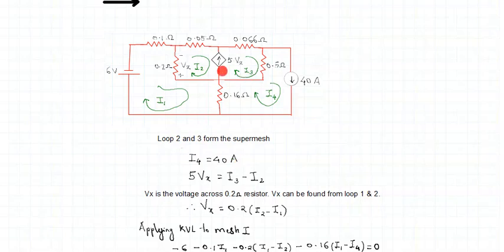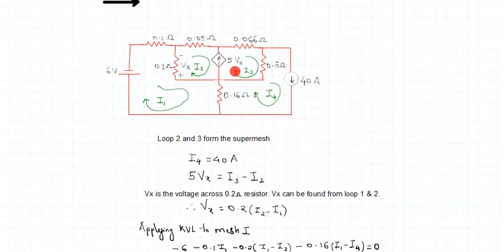Now look at the dependent current source 5vx. The currents flowing in that branch are i2 and i3. Following the direction of the current source, which is upward, the current flowing upward is i3. So the current source relates to the branch currents as i3 minus i2 — i3 is positive because it flows in the upward direction and i2 is negative.